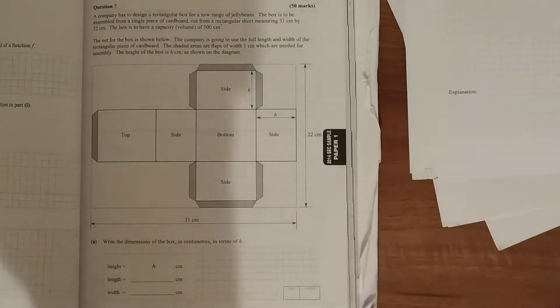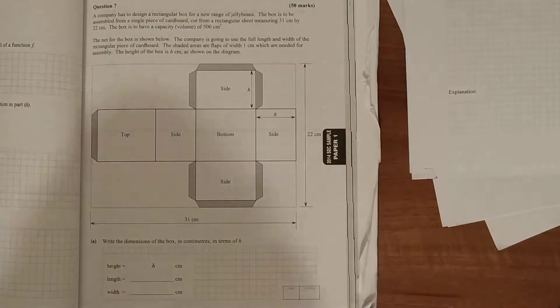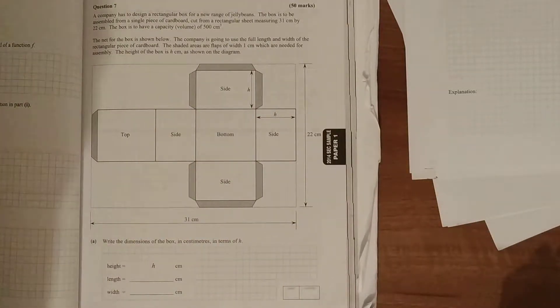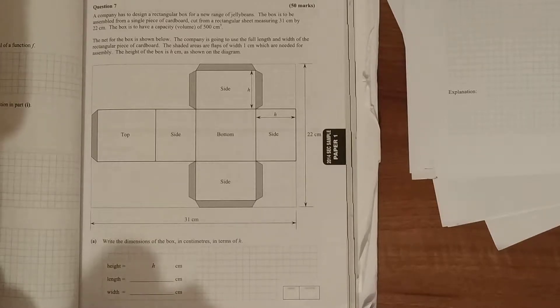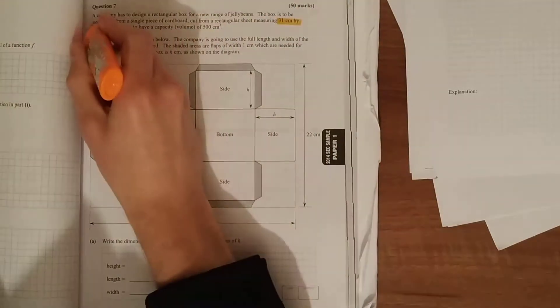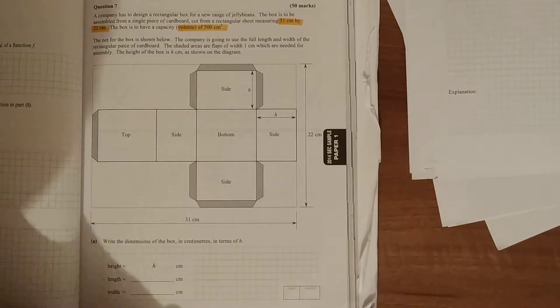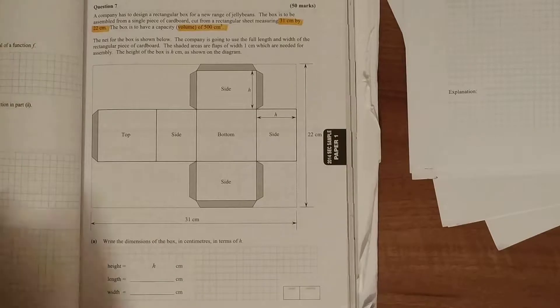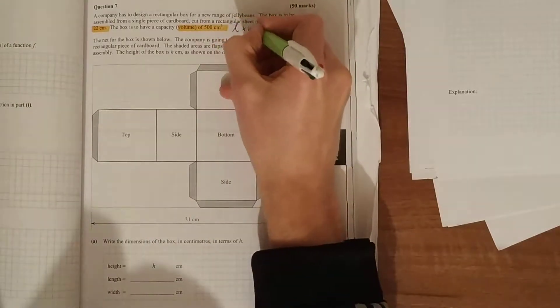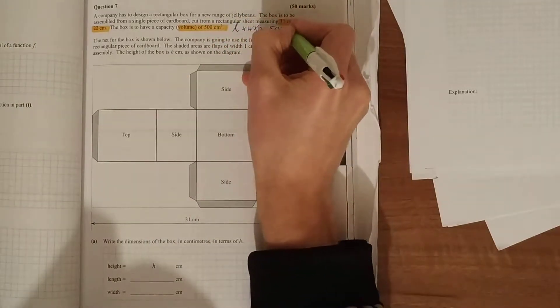The sample paper of 2014 had a volume question that was linked to differentiation. Here, the company has to design a rectangular box for a new range of jelly beans. The box is to be assembled from a single piece of cardboard cut from a rectangular sheet measuring 31 by 22 centimeters, and the box is to have a capacity of 500 centimeters cubed. So the length by width by height is equal to 500 centimeters cubed.